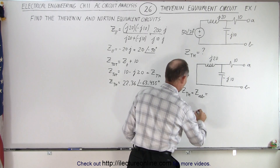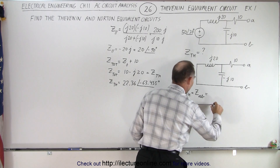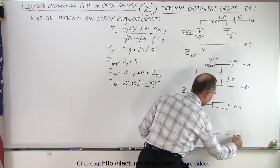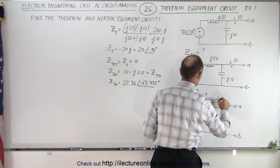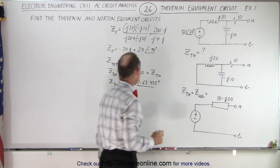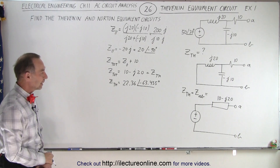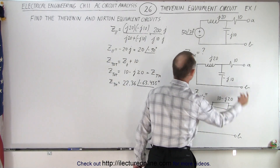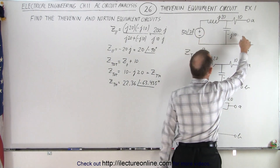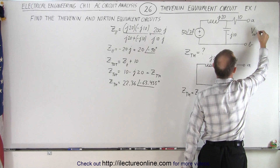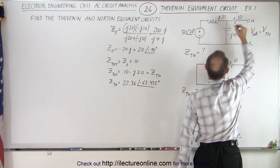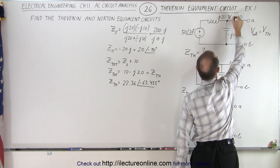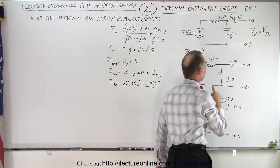Now let's draw the Thevenin circuit. We have the Thevenin impedance, but we still need the Thevenin voltage. Here are terminals A and B, and the impedance is 10 - j20. To find V_Thevenin, we need the voltage from A to B with everything restored, and we realize that the voltage from A to B is the same as the voltage across the capacitor.